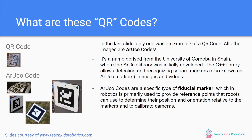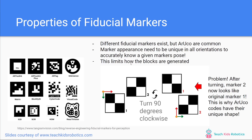Let's first talk about properties of fiducial markers. There are different fiducial markers that exist, but ArUco are commonly used in industry. What makes one of these markers important is that the appearance should be unique in all orientations. For example, consider a 2x2 grid where a black square is used to make a unique marker. If we have two such markers labeled 1 and 2 and rotate them 90 degrees clockwise, marker 2 looks like marker 1 and vice versa. This would be an issue, as we need to identify the exact orientation of our marker to understand how the robot and camera are oriented. This is why all ArUco codes are uniquely shaped — regardless of orientation, they have a unique visual signature.